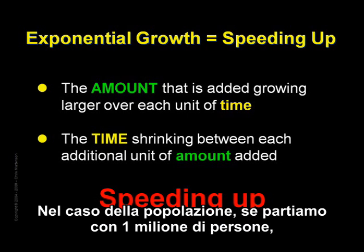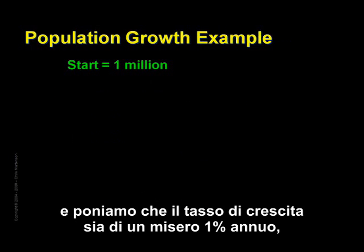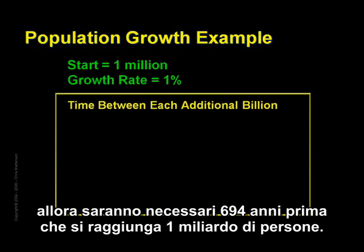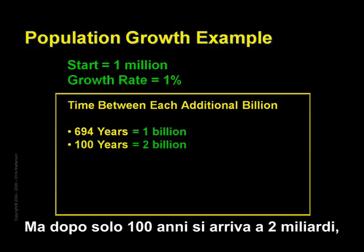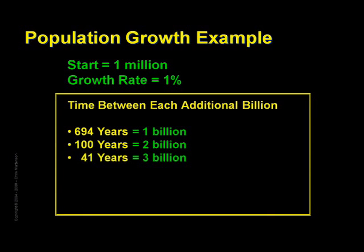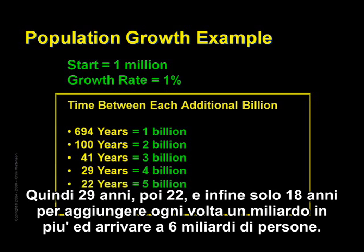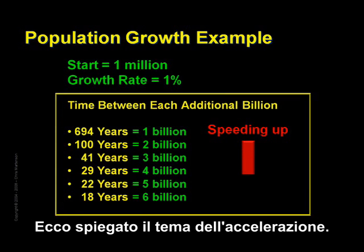To illustrate this using population: if we started with one million people and set the growth rate to a measly 1% per year, we'd find that it would take 694 years before we achieved a billion people. But we'd be at 2 billion people after only 100 more years, while a third billion would require just 41 more years. Then 29 years, then 22, and then finally only 18 years to add another, bringing us to 6 billion people. Each additional billion people took a shorter and shorter amount of time to achieve. Here we can see the theme of speeding up.